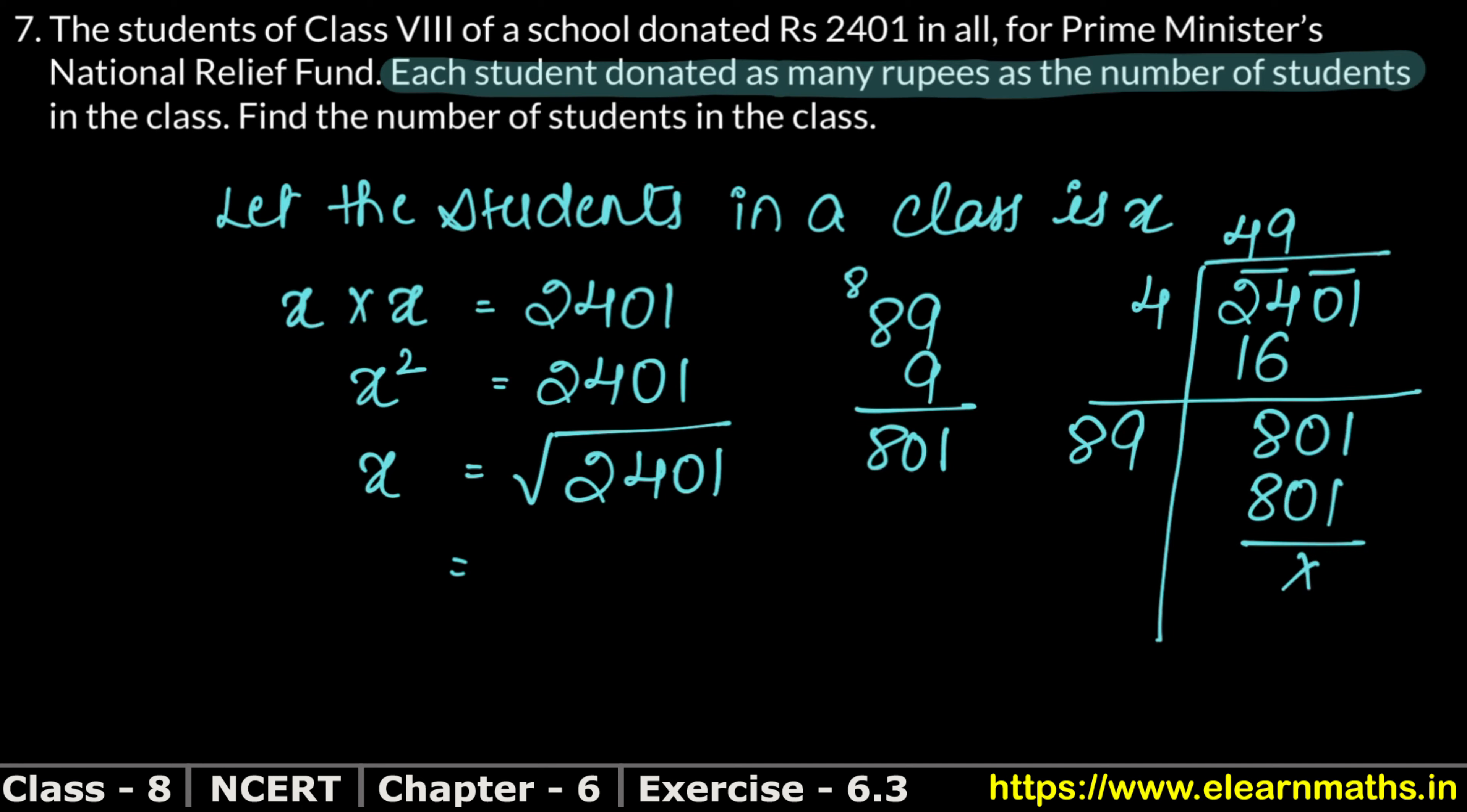So this is the number which is square, that is 49. The number of students in a class is 49, that is the answer.